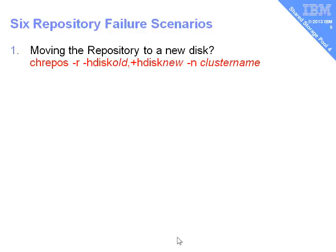It is the change repos command. It took me a little while to find this. It turns out it's the same command that HACMP — now called PowerHA — uses, because we're using the same cluster-aware AIX technology. So here we're going to do the replace option: we tell it the old disk name with a minus in front and a plus for the new disk we're moving to, and we give it the name of the cluster. That takes about 25 seconds and moves the repository disk from one disk subsystem to another.